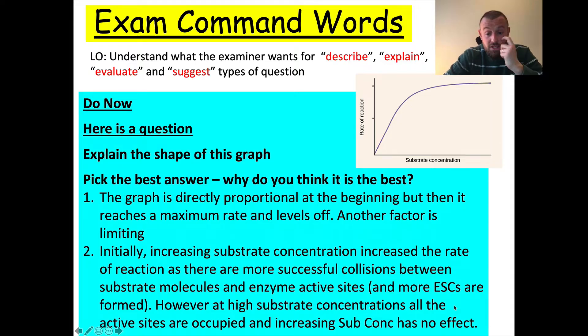OK, so the answer that is best is number two, because number two explains the shape of the graph and doesn't describe it. Number one is describing the shape or pattern of the graph, and number two is explaining why the graph has that shape. So that's one key mistake that students often make - they describe a graph and don't explain it, or they do the opposite if the question is asking the other way around.